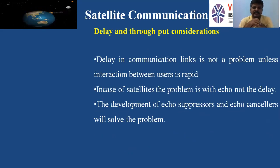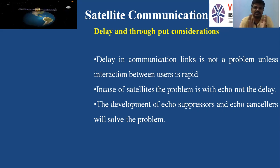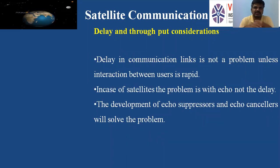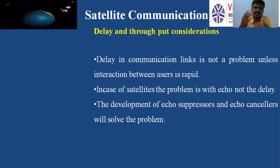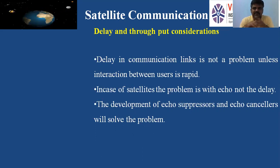The next topic is delay and throughput considerations in satellite communication. There will not be much considerable delay, but if the interaction between users is very fast, there might be some delay or echo. For example, if users are continuously talking to each other, they may hear their own voice — that is called echo. The echo problem can be solved by introducing echo suppressors and echo cancellers, which reduces delay and improves efficiency.